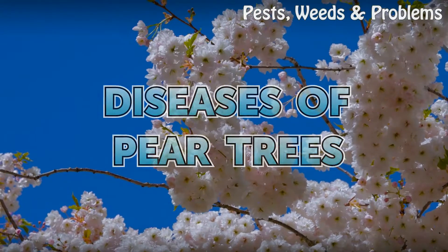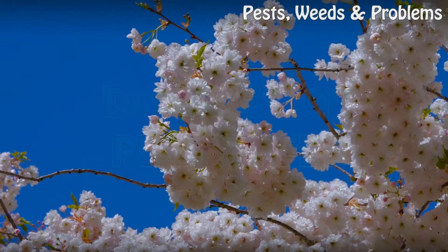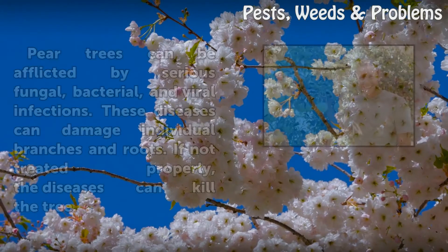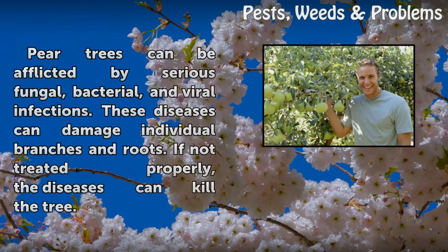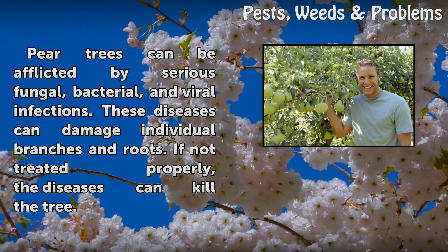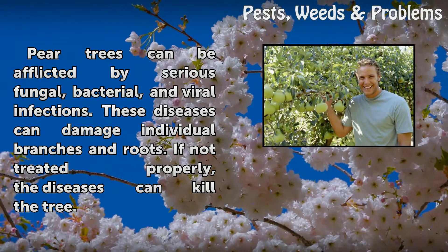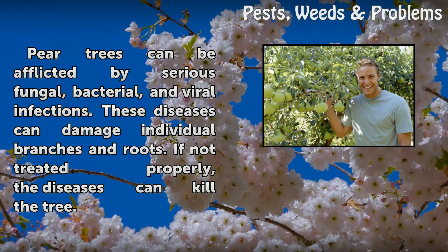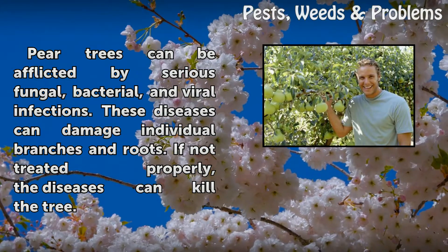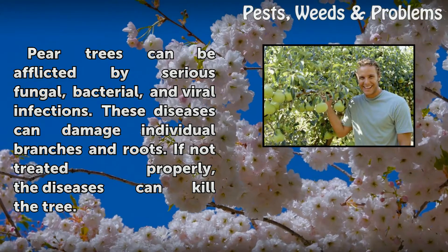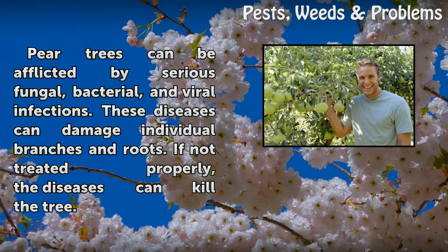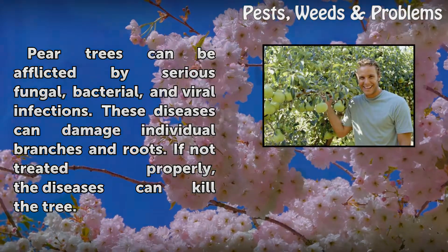Diseases of Pear Trees. Pear trees can be afflicted by serious fungal, bacterial, and viral infections. These diseases can damage individual branches and roots. If not treated properly, the diseases can kill the tree.